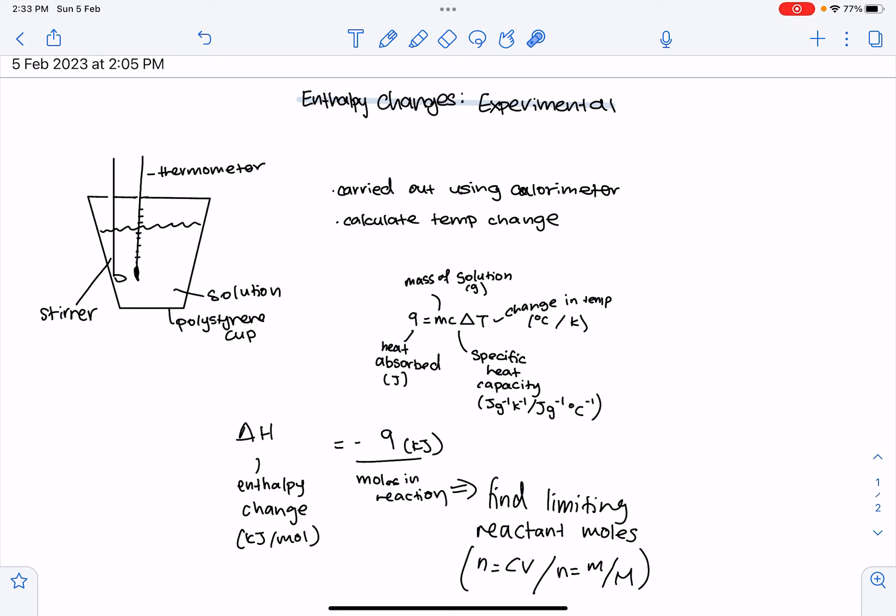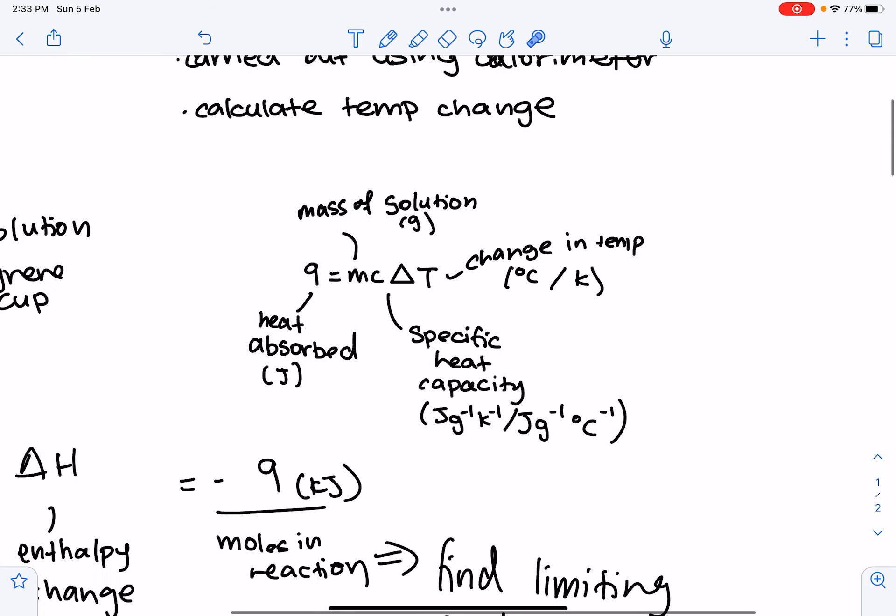So, once the minimum and maximum temperatures of the reaction mixture are known, the enthalpy change can then be calculated. So, this is the equation we're going to be looking at first: Q equals MC delta T. That means the heat absorbed in joules is equal to the mass of solution in grams, times specific heat capacity times the change in temperature.